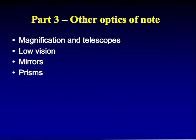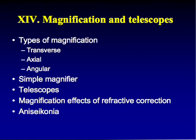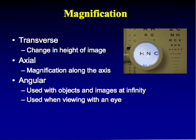We're going into other optics topics of note — specifically magnification and telescopes, and how they tie into low vision, mirrors, and prisms. We'll discuss magnification first: simple magnifiers, telescopes, and the magnification effects of refractive correction and anisoconia.